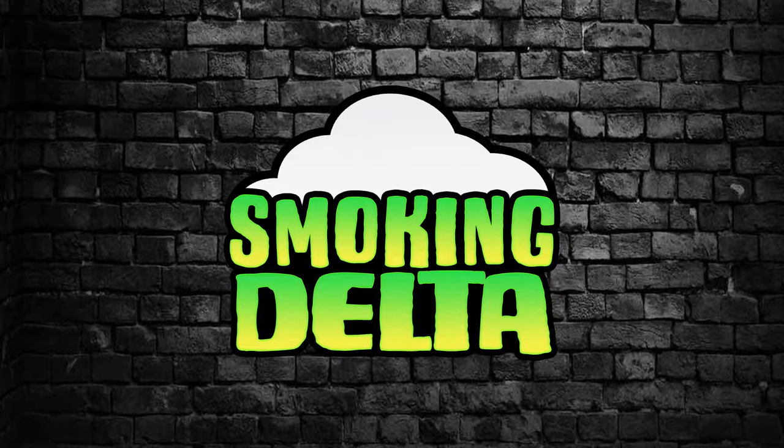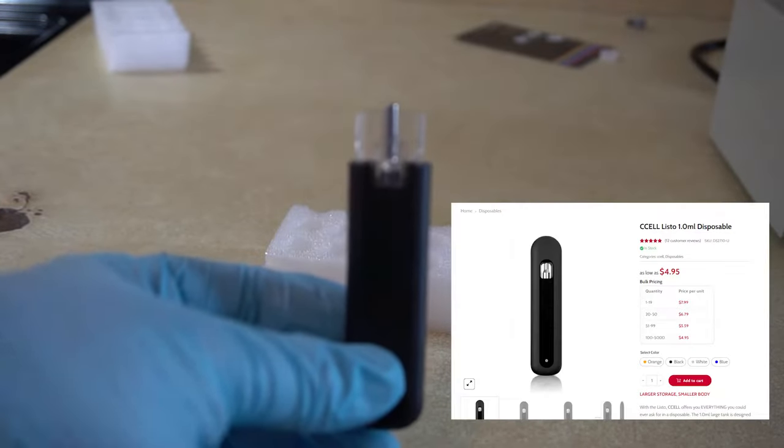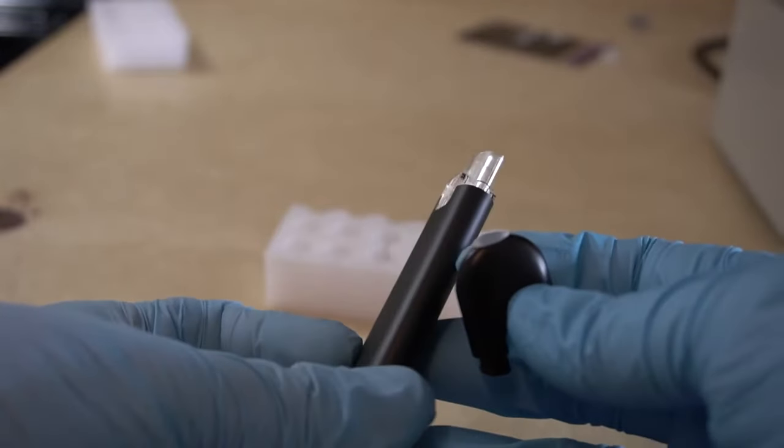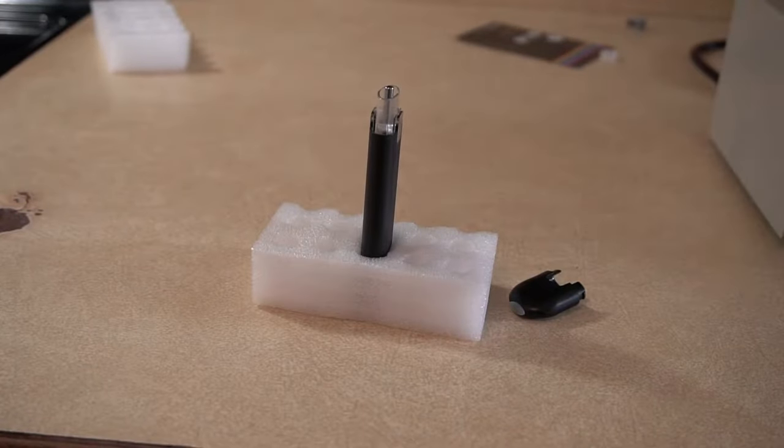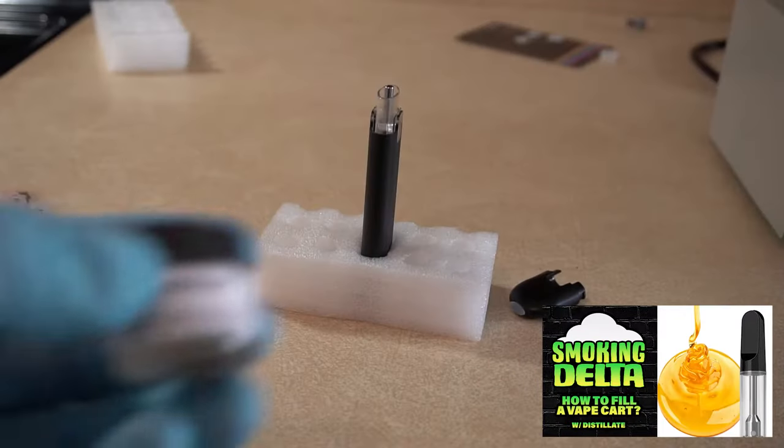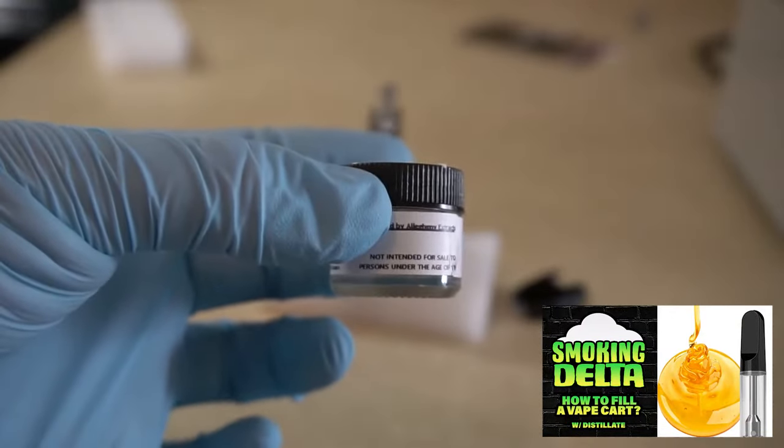Hello everyone, welcome back to the channel. Today we're going to be talking about how to fill a disposable. My choice of device is a CCELL Listo, really good disposables, really easy to fill. There's three ways you can do this: either by a THC syringe, by raw distillate,